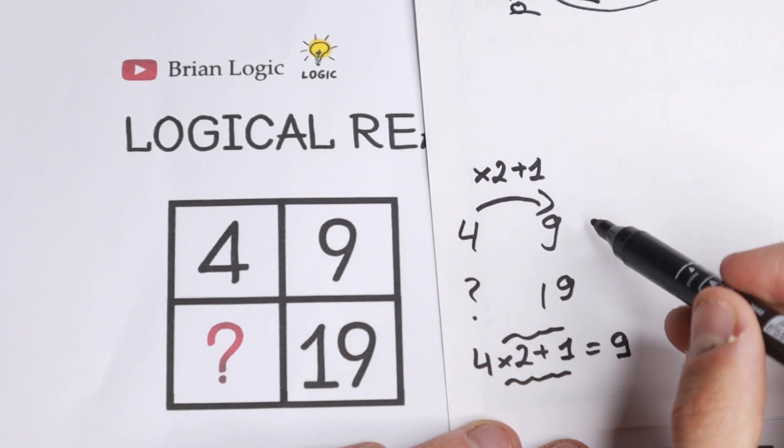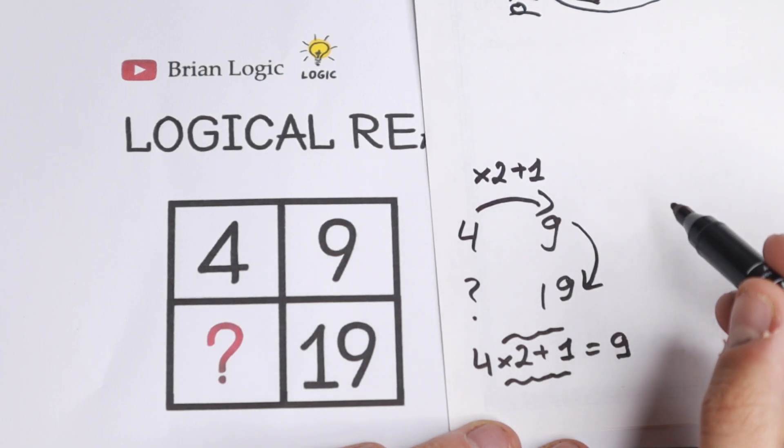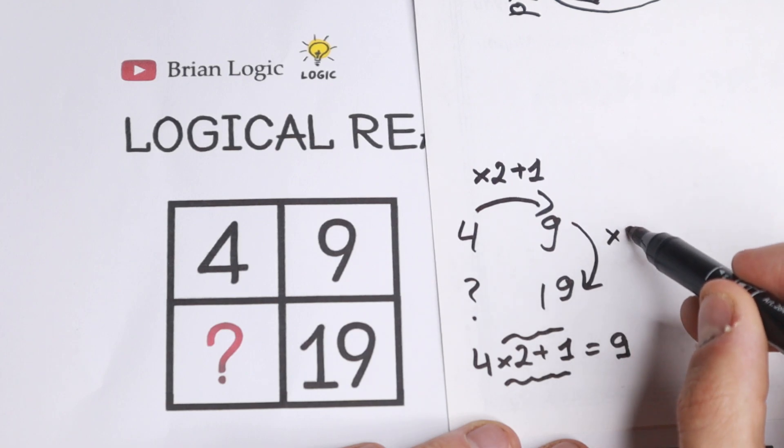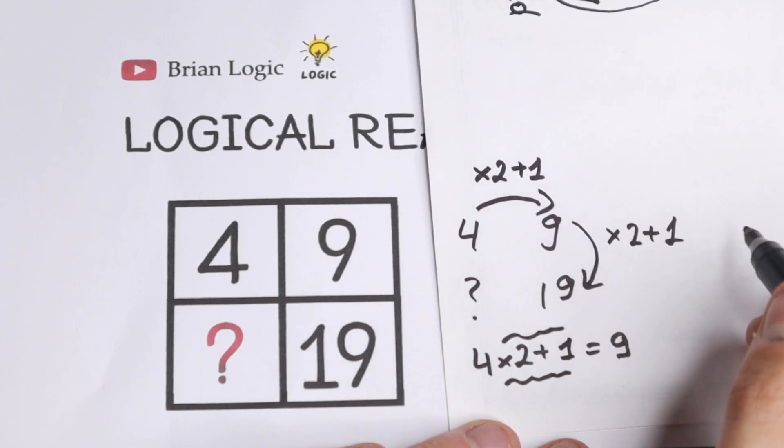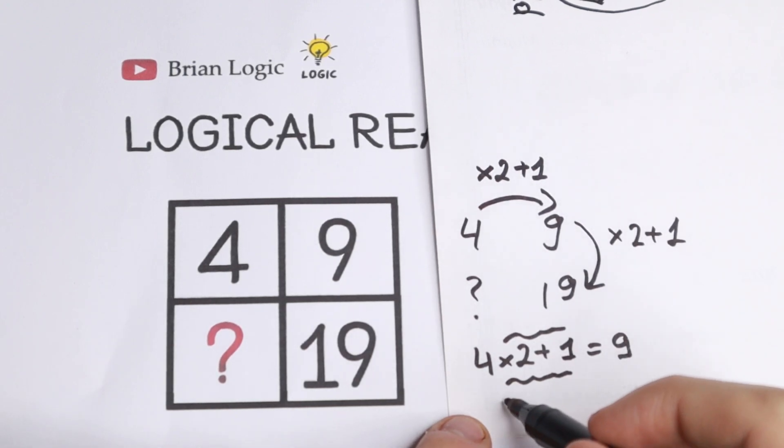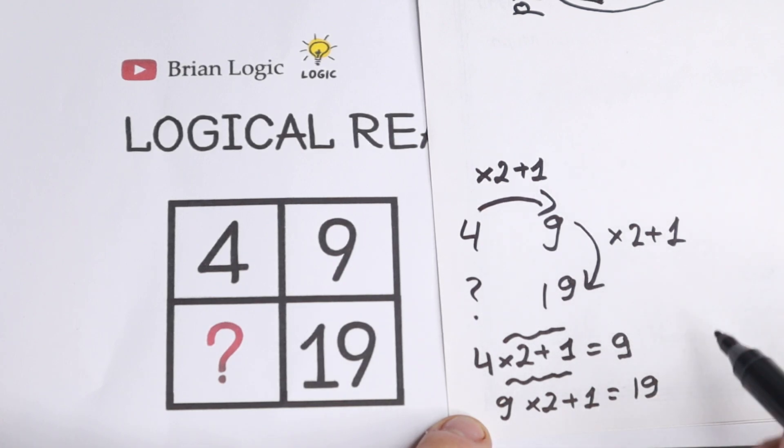Now let's check this pattern in this case, like a watch right here, 9 and 19. If we multiply this 9 by 2 and add 1, what we will have? We will have a really interesting answer, because 9 times 2 plus 1, it will be 18 plus 1, it will be 19, which is absolutely correct. So this pattern absolutely works.